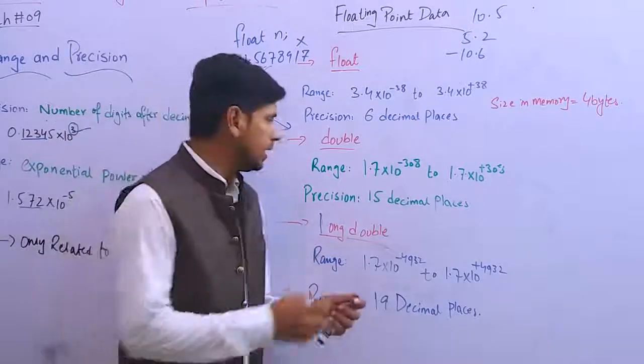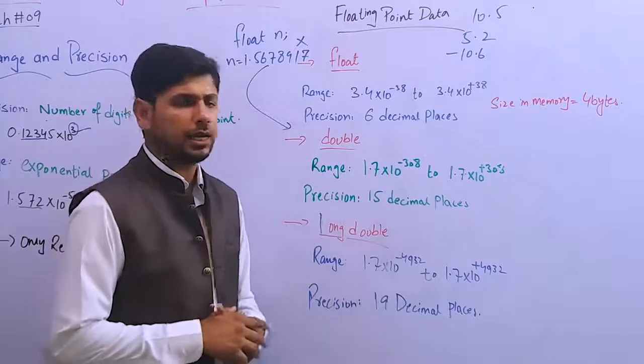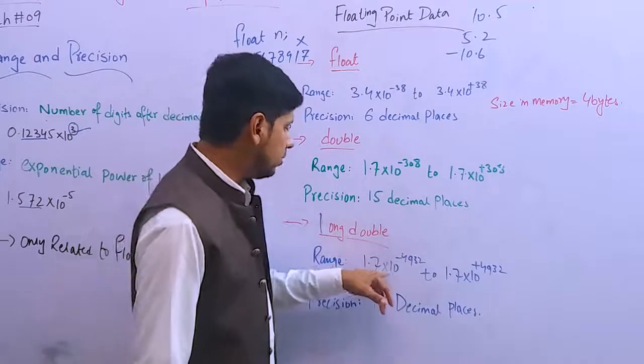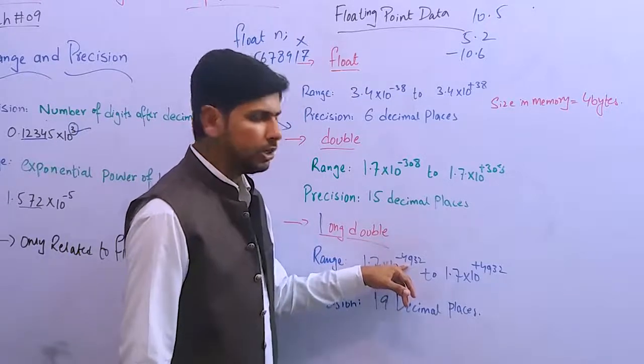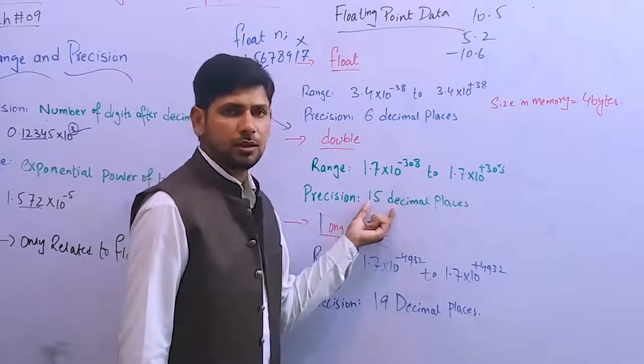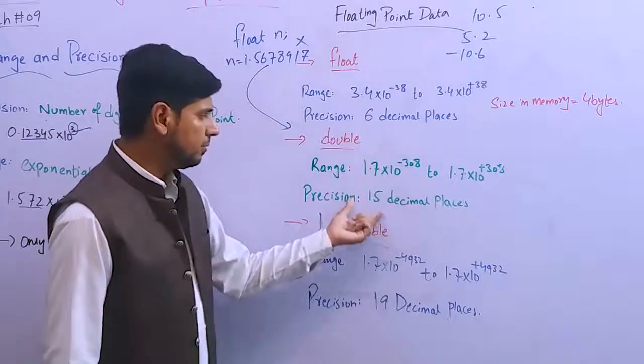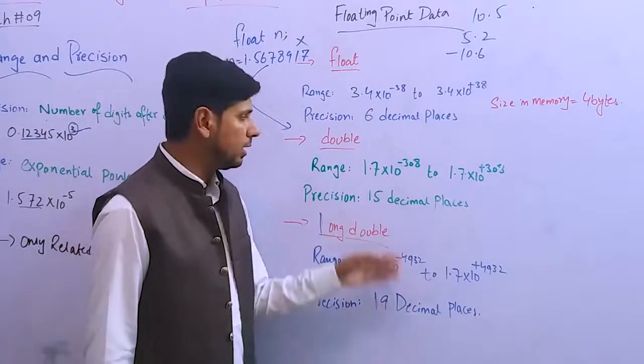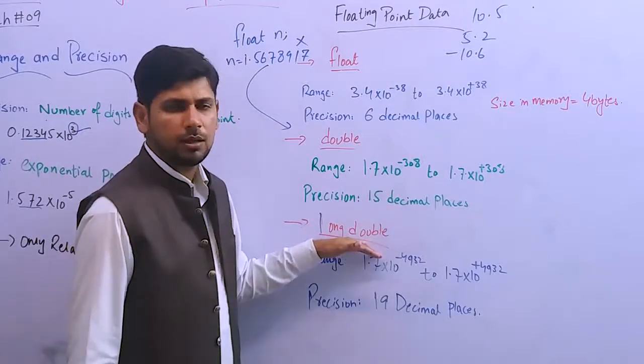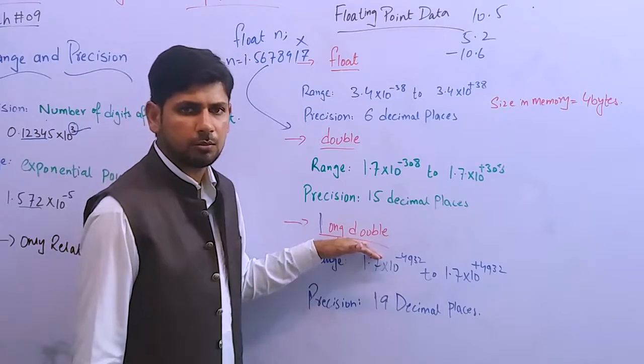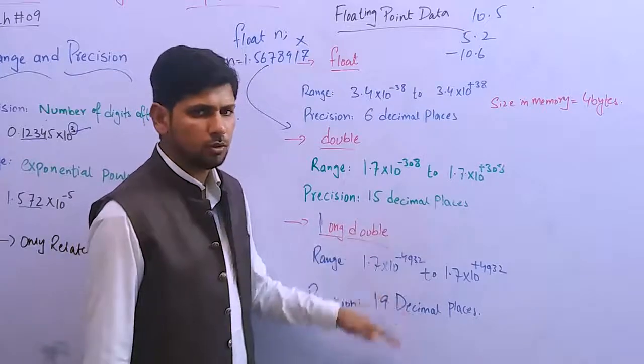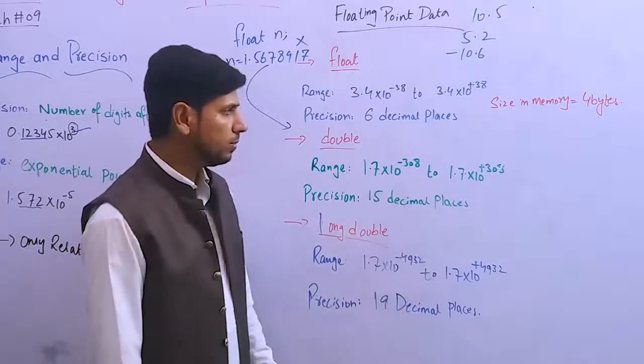Long double has a range of 1.7 into 10 to the power minus 4932, and precision of 19 decimal places. Float has 6 decimal places, double has 15 decimal places, and long double has 19 decimal places. If you have a large number to store, you use long double data type.